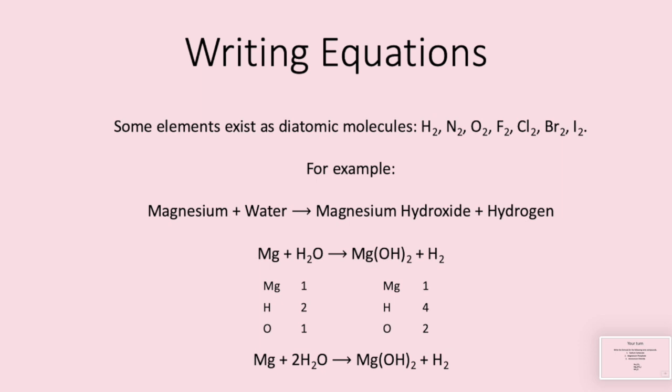We therefore have the equation Mg plus H2O goes to Mg(OH)2 plus H2. Now we need to balance the atoms. I like to draw a little table. We can see on the left side of the equation we have one magnesium, two hydrogens and one oxygen. On the right hand side of the equation we have one magnesium, four hydrogens and two oxygens. That's not balanced. We have two more hydrogens and an extra oxygen on the right. Therefore we need to add a big 2 in front of the H2O on the left. If we do this we should have the same number of atoms on each side.